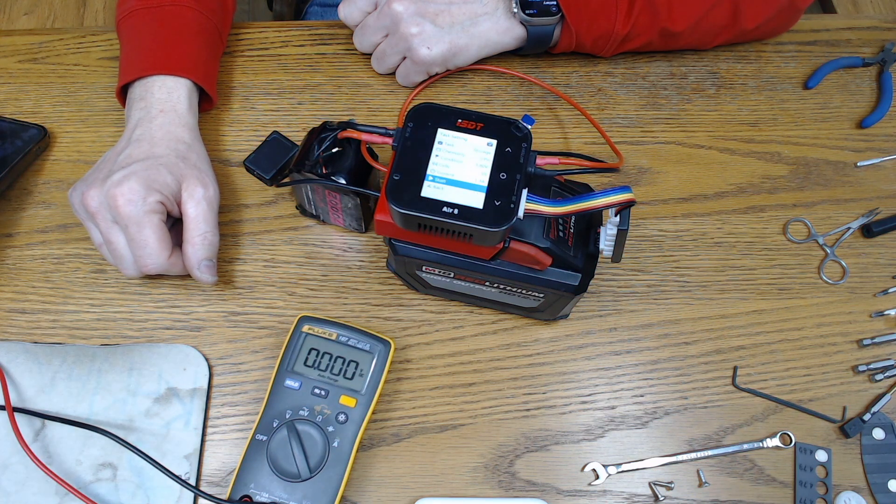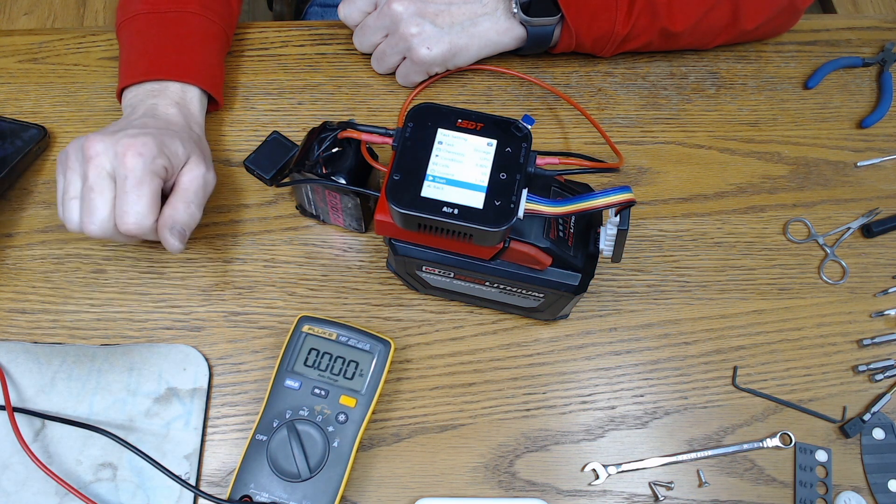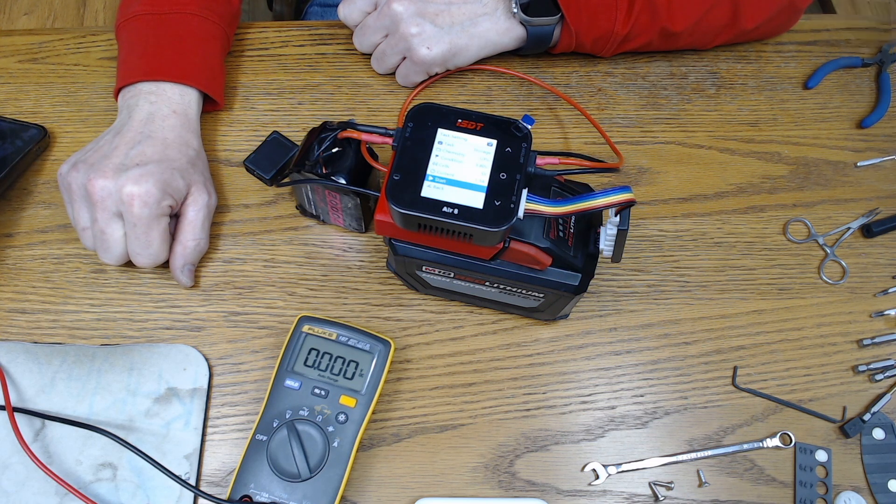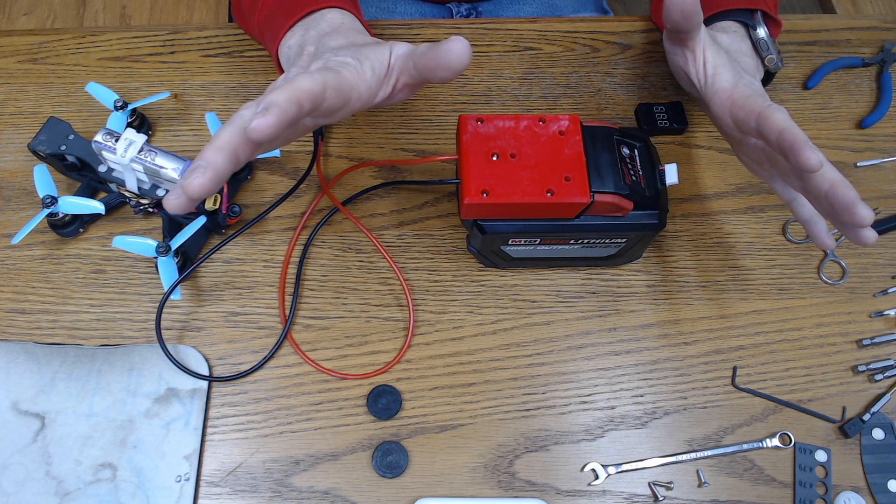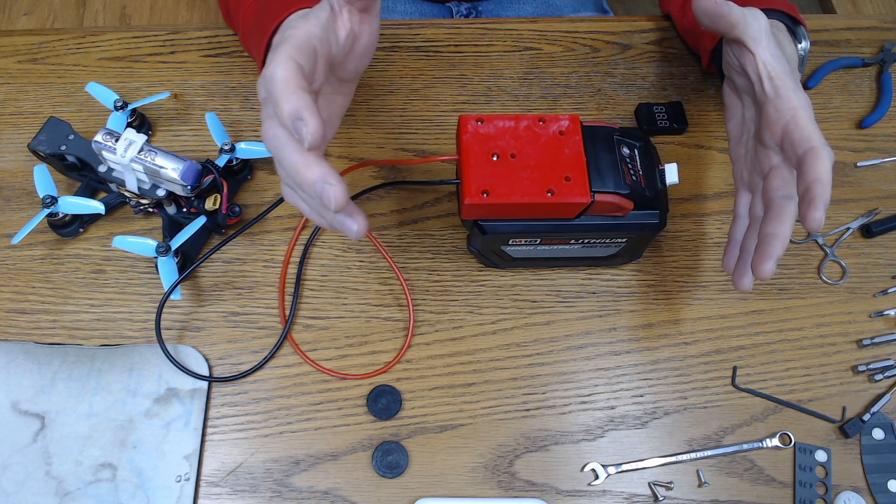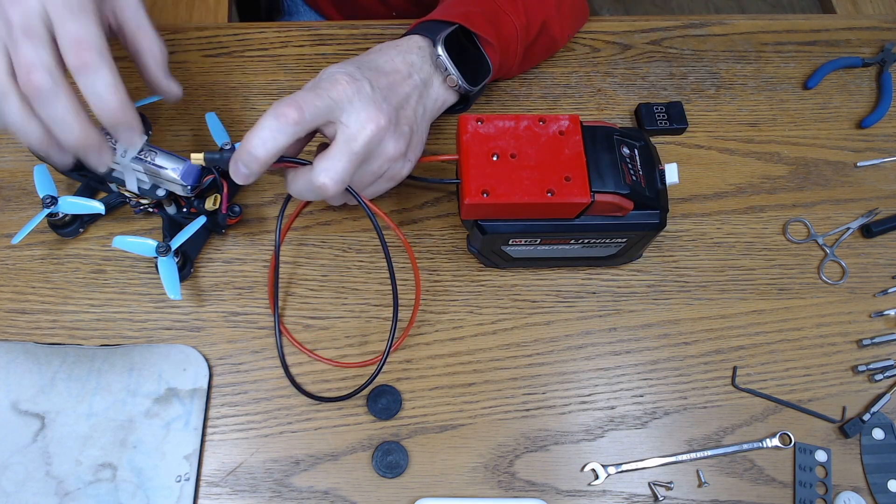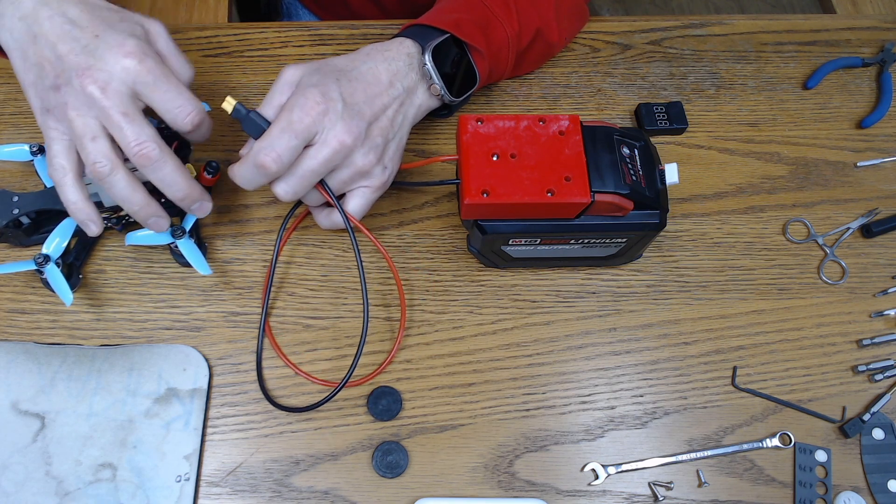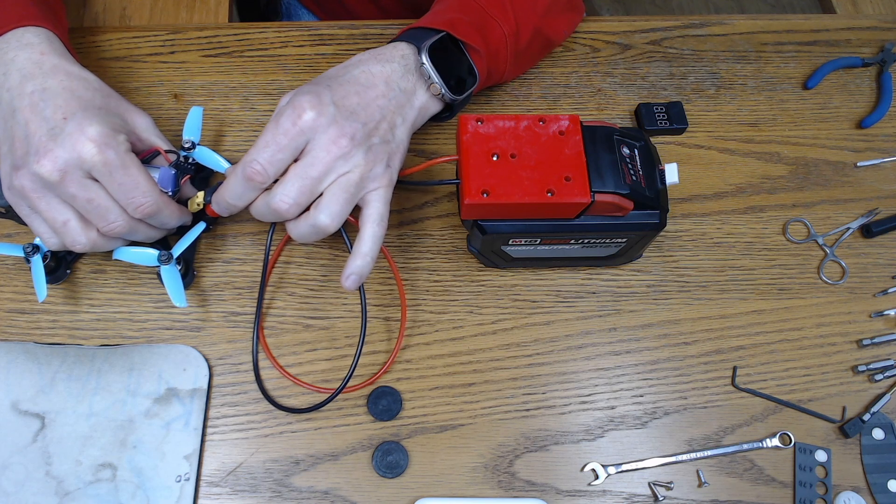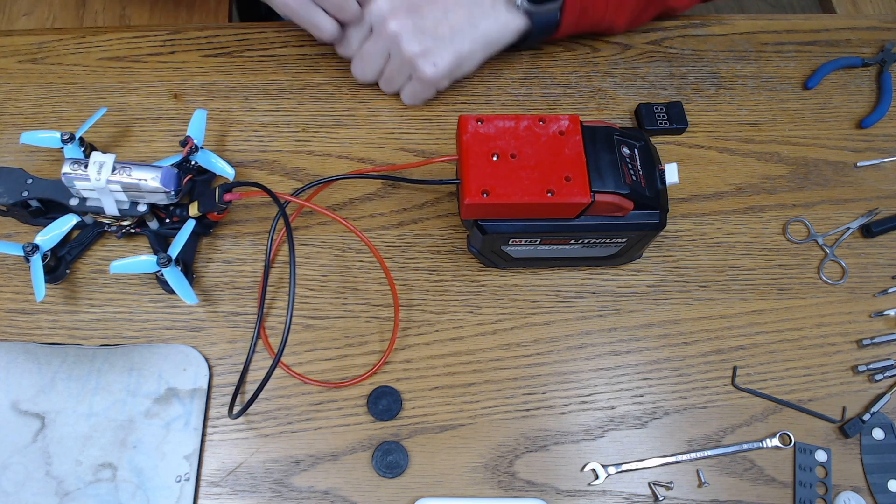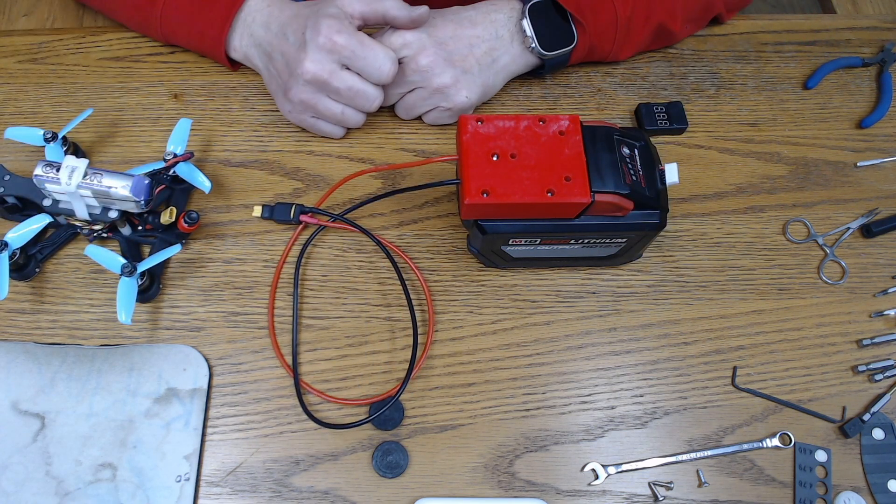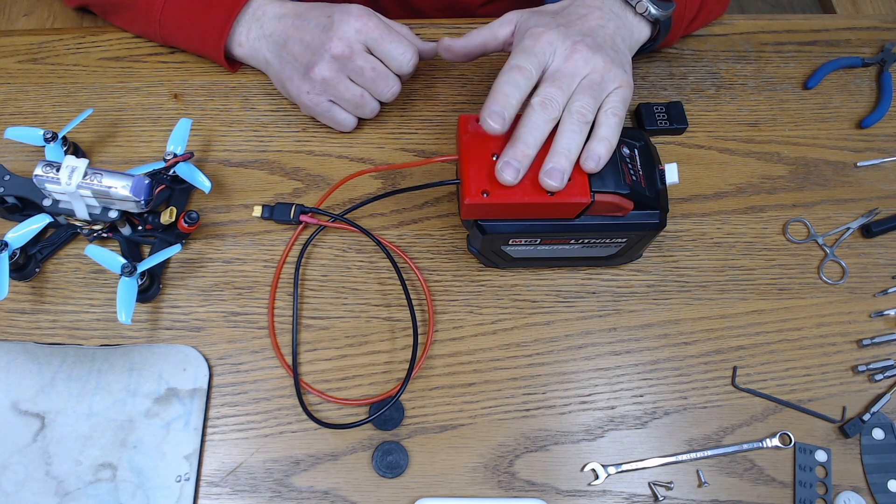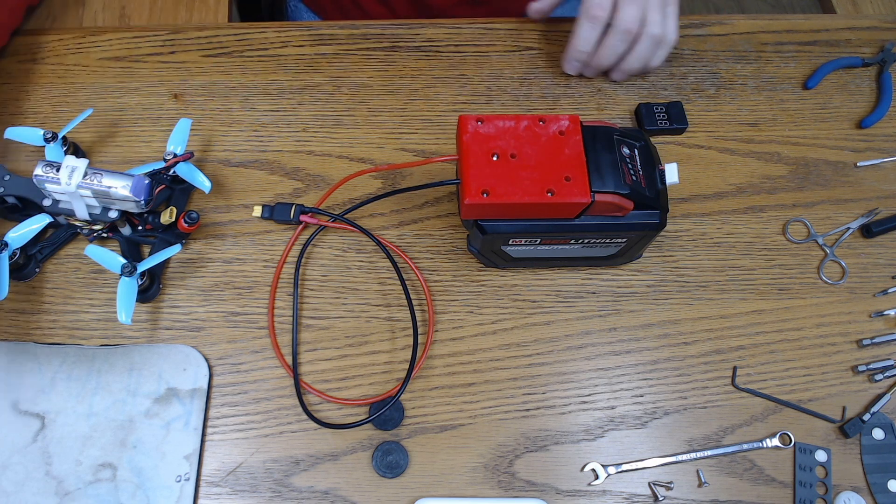If you like the video, like and subscribe. For all you drone flyers out there, how nice would that be to have a giant Milwaukee battery to power up your drone when you want to do a little configurations on your Beta Flight? Check it out. Power right up right from your big old Milwaukee. Unlimited amount of power there for a while anyway.